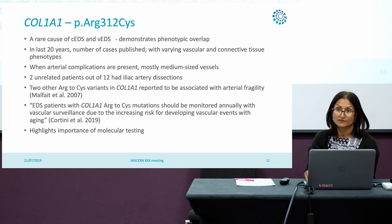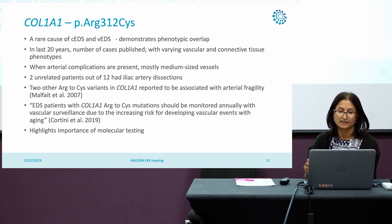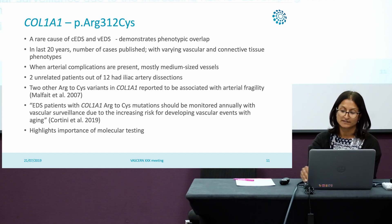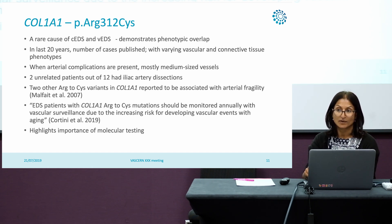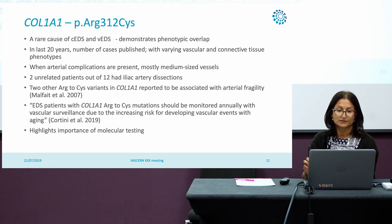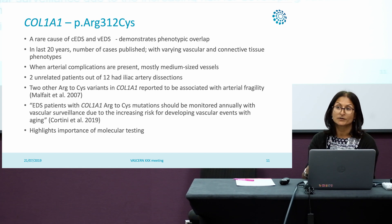Moving on to Col1A1 — this is a rare cause of both classical EDS and vascular EDS, and is a good example of demonstrating phenotypic overlap. This particular arginine-to-cysteine variant has been reported in a number of published cases. The literature is quite variable: some cases are within the vascular EDS literature, some in classical, some with a vascular classical-like phenotype. When you look at the arterial complications in these cases, they're mostly medium-sized vessels. Two unrelated patients out of 12 have had iliac artery dissections. There are also two other arginine-to-cysteine variants at different locations of the Col1A1 gene which are associated with arterial fragility. It's therefore important to consider that patients with these arginine-to-cysteine mutations should be monitored similarly to how we monitor our vascular EDS patients.